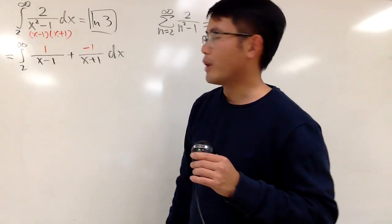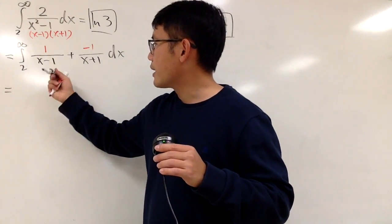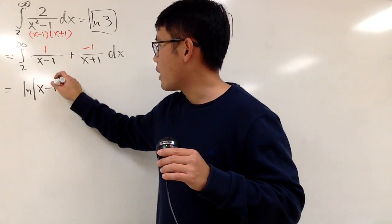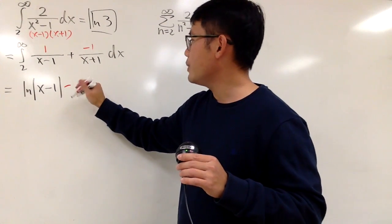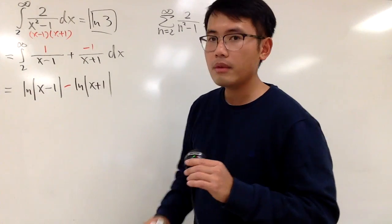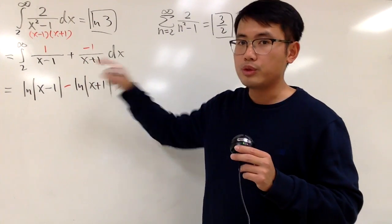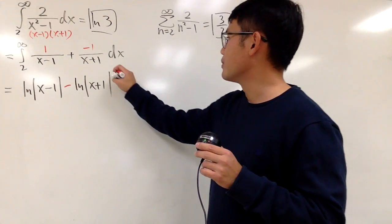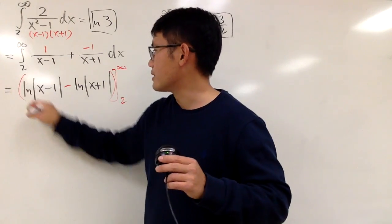You can just integrate this. As we can see, integrating 1/(x-1) gives natural log of the absolute value of (x - 1), and then we have this minus here, and then we have natural log of (x + 1). Be careful — you have to look at the derivative of (x + 1) which is just 1, so you don't have to divide anything. Then we go ahead and plug in numbers and handle the infinity.